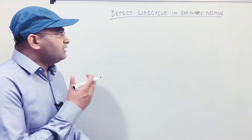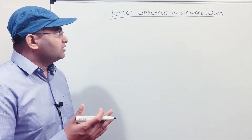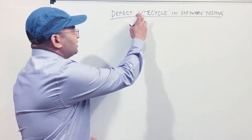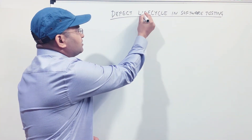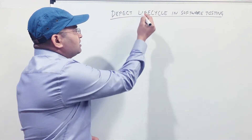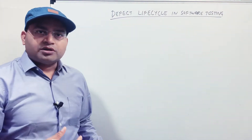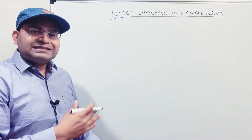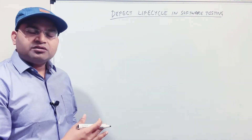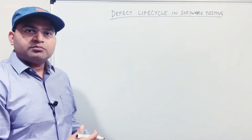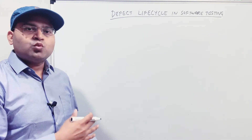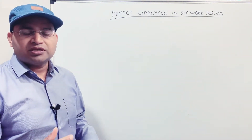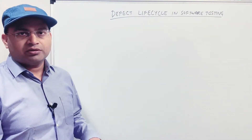When we talk about the defect lifecycle, it is the process that a defect or a bug will follow from its initiation — from the point where it is raised — until it is closed in the project.